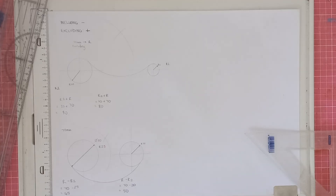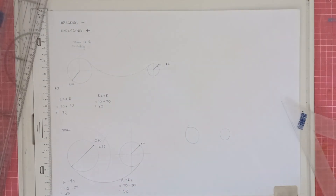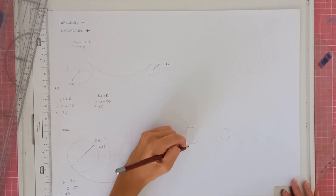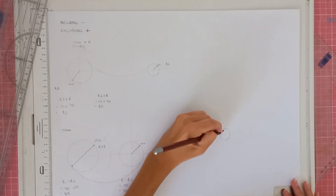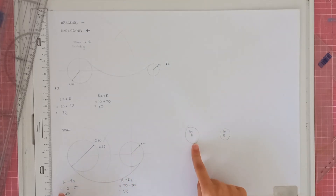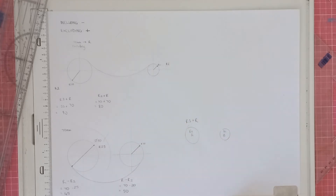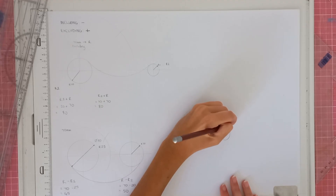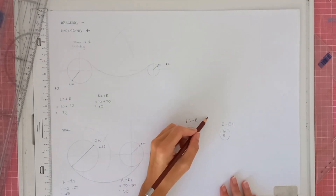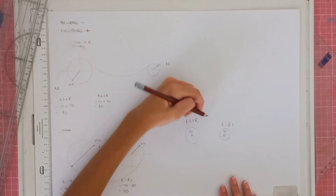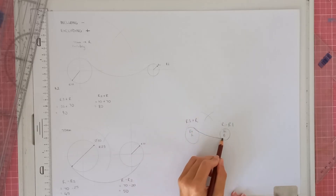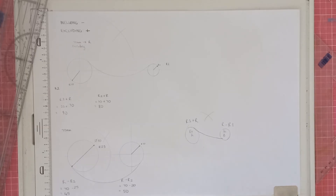That's basically the rule. If you have two circles and need to exclude circle A and include circle B, just apply the correct formula: for excluding use r1 plus r, and for including use r minus r1. You'll get your two arcs and where they intersect is where your line goes. It's a simple rule and I hope this helped you.